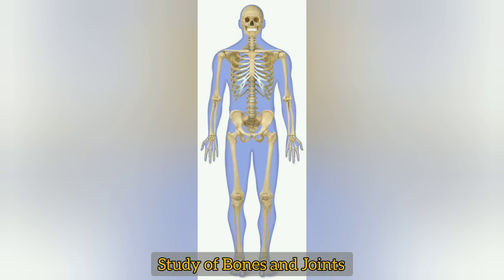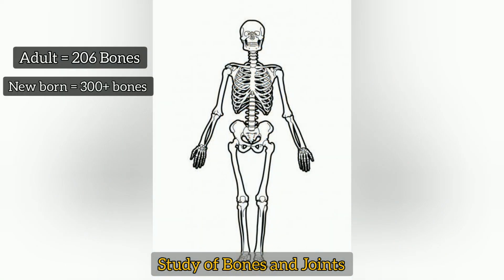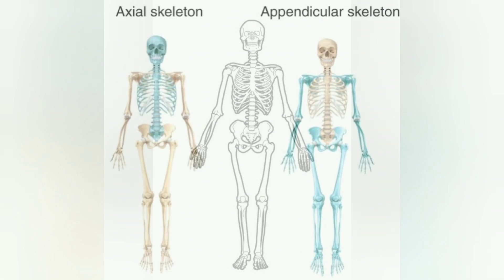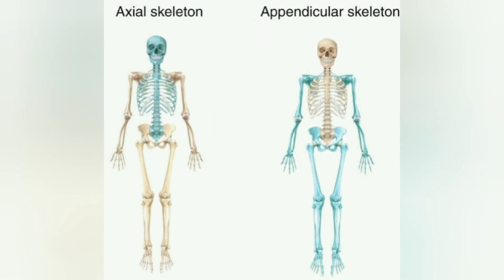Skeletal system. In our body, there are 206 bones. But the interesting fact is that some bones fuse together, so finally we have 204 bones. In our skeletal system, we divide it into two parts.